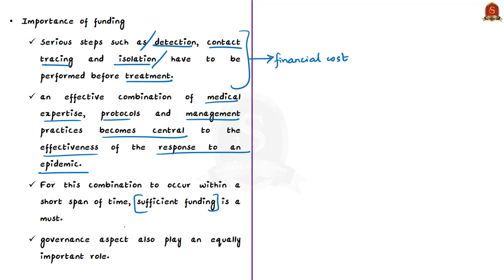While money can do a set of things, governance aspects also play an equally important role. So both have to be given adequate attention and importance.